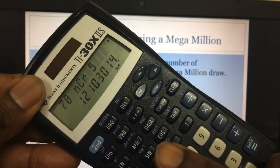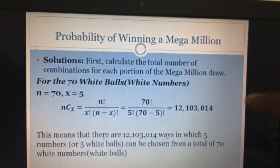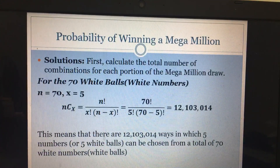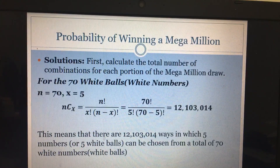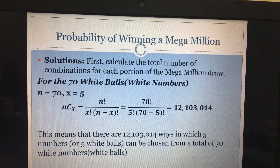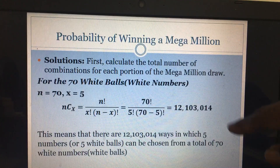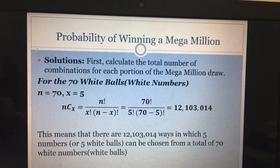The calculator gives us 12,103,014. So there are 12,103,014 ways of choosing five numbers from the 70 white balls. You have only one chance out of 12,103,014 possible combinations — that is already a lot.